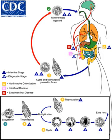Prevention of amoebiasis is by improved sanitation, including separating food and water from feces. There is no vaccine. There are two treatment options depending on the location of the infection. Amoebiasis in tissues is treated with either metronidazole,